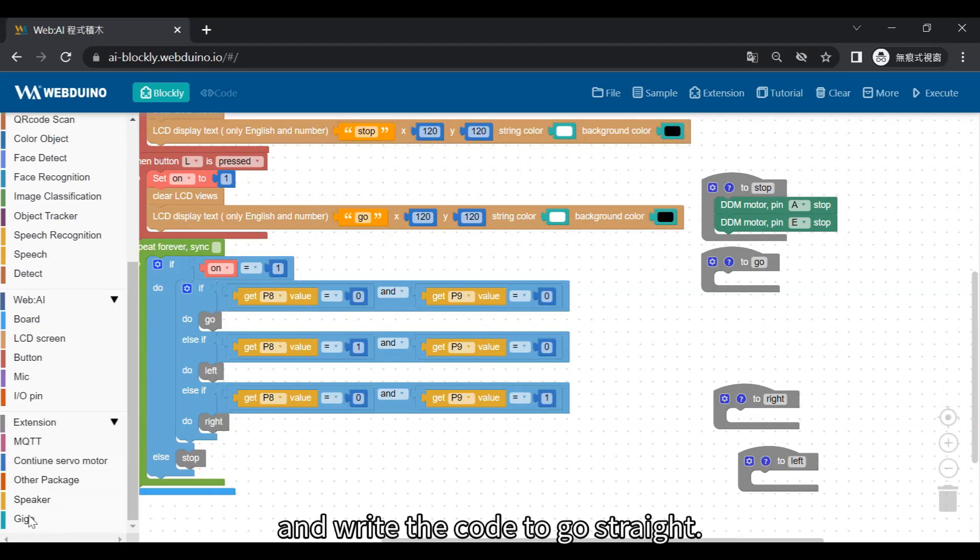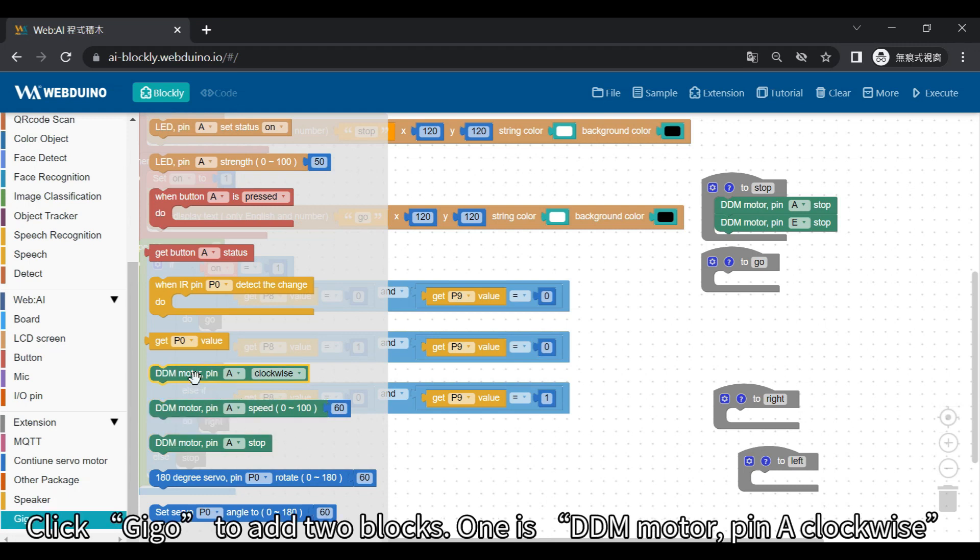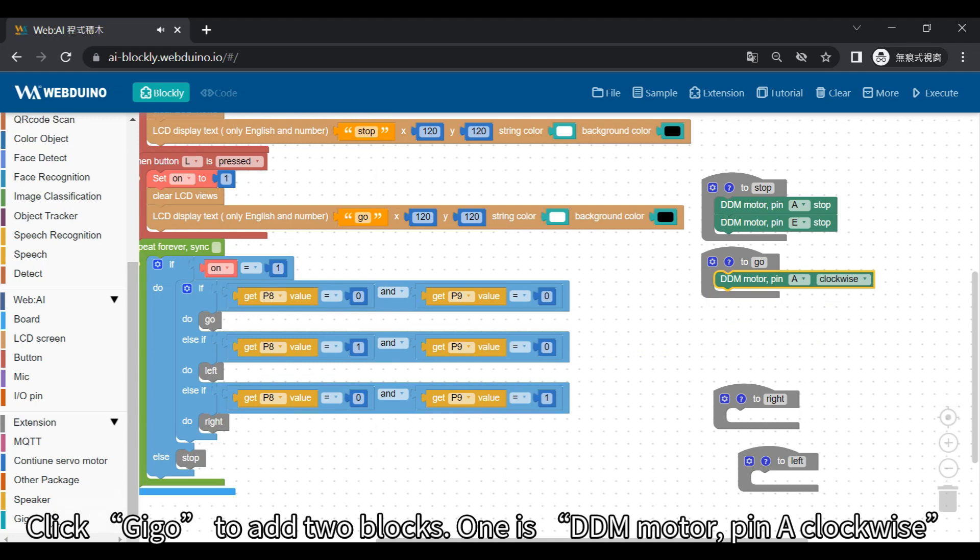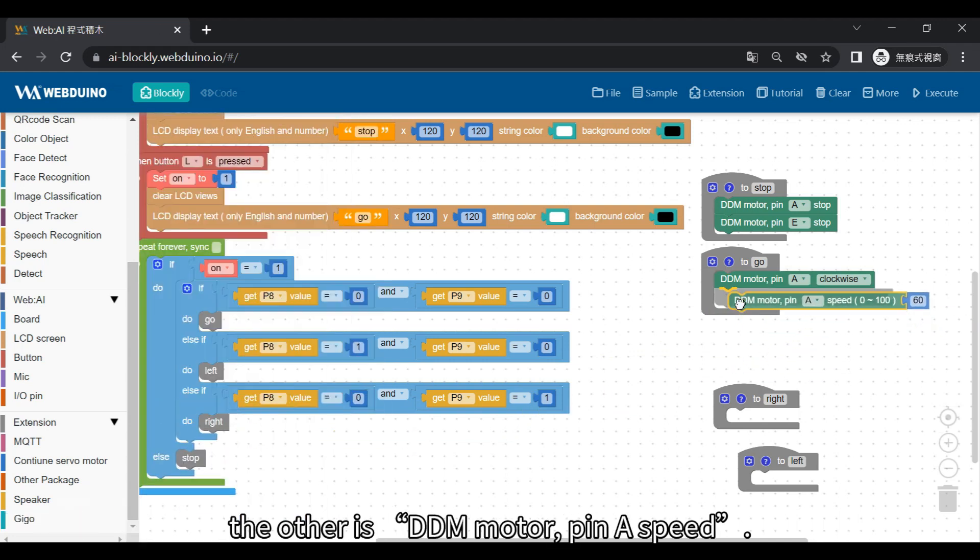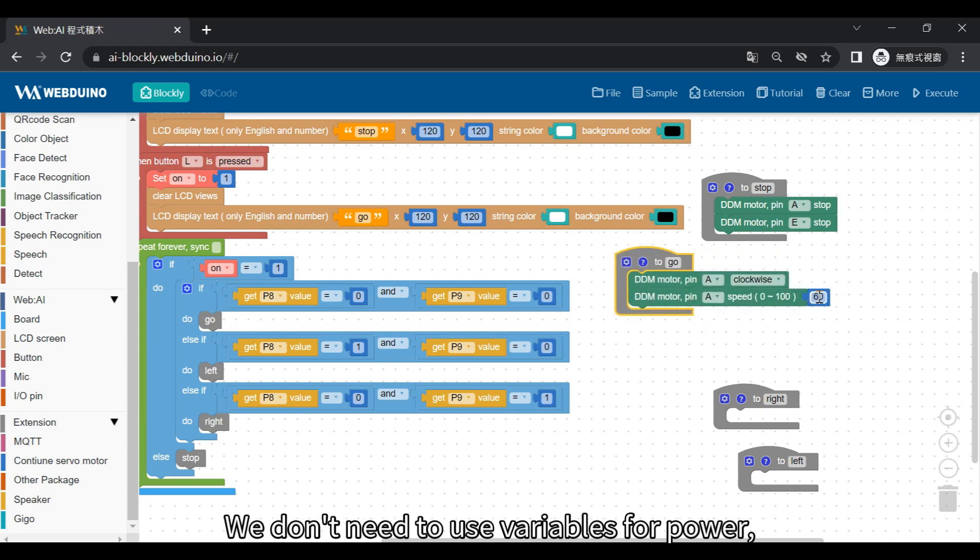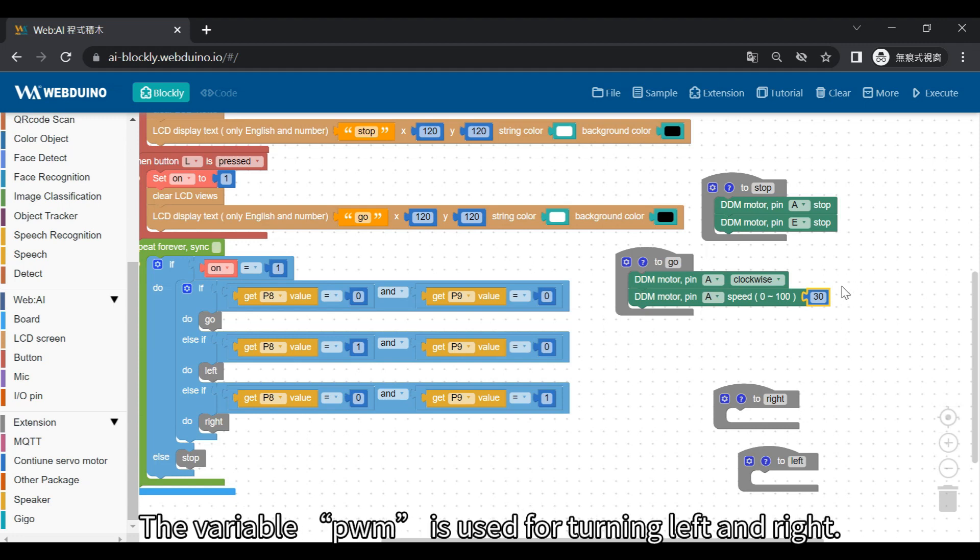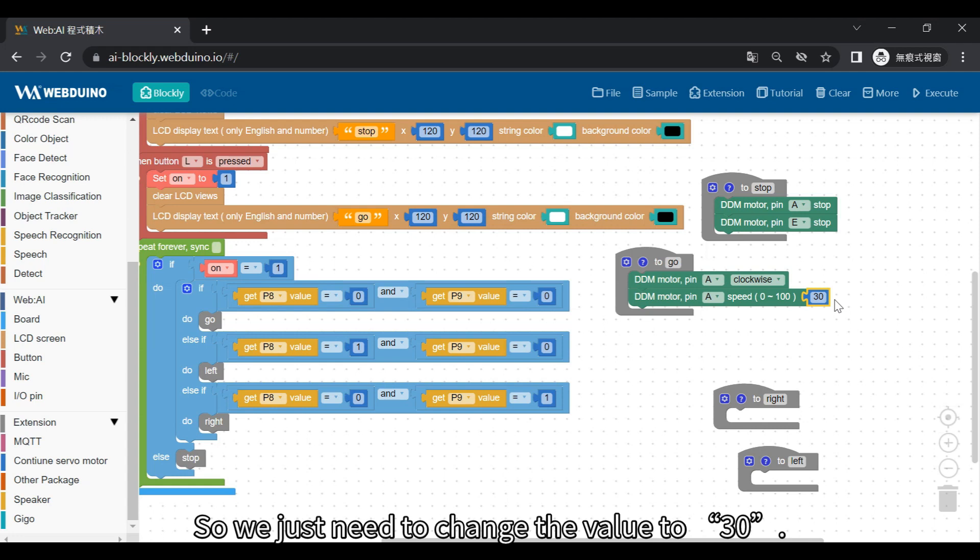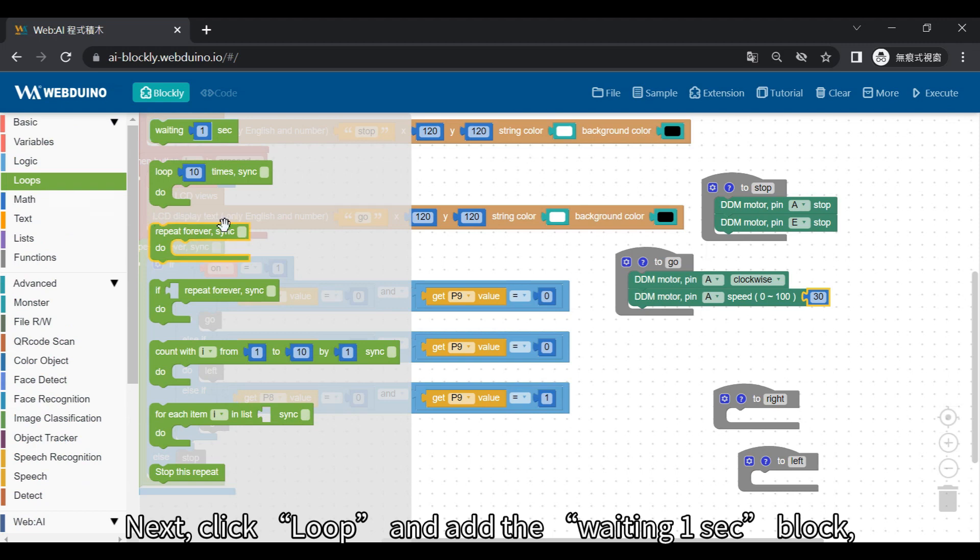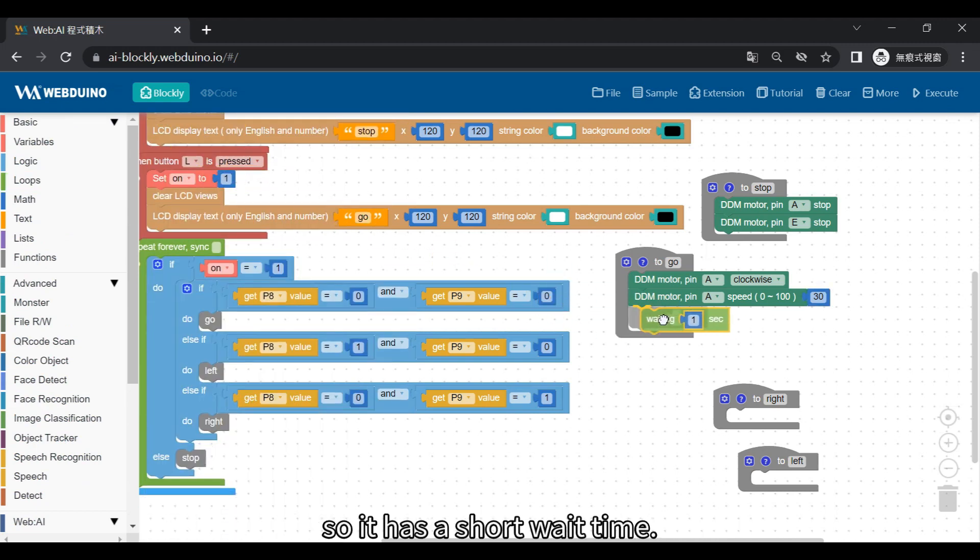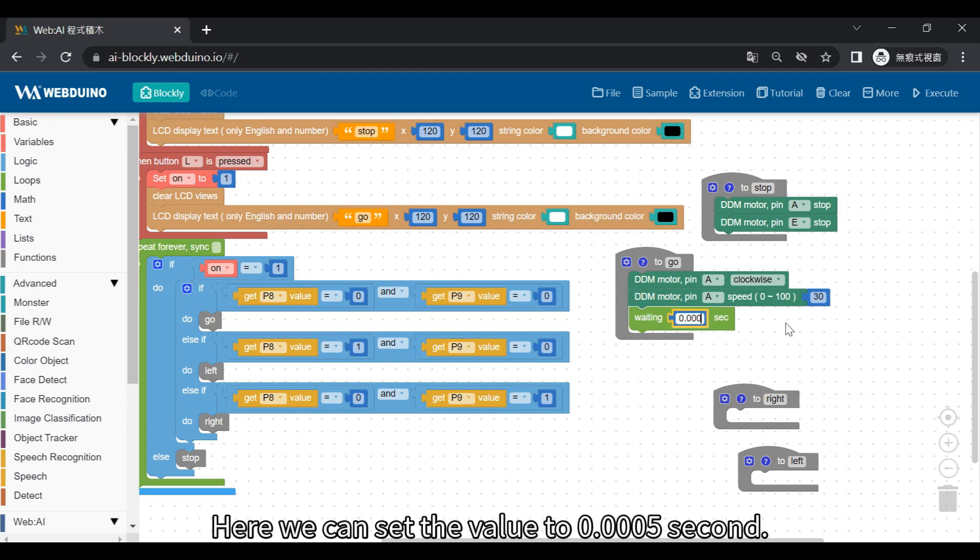Let's go back to the program and write the code to go straight. Click ego to add two blocks. One is DDM motor pin A clockwise. The other is DDM motor pin A speed. We don't need to use variables for power because go straight is a simpler program. The variable PWM is used for turning left and right. So we just need to change the value to 30. Next, click loop and add the waiting one second block, so it has a short wait time. This will let it move forward a bit. Here we can set the value to 0.0005 second.